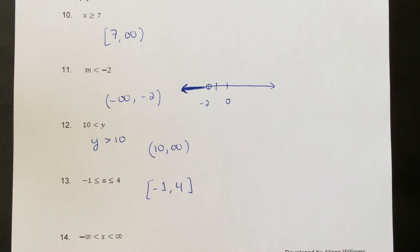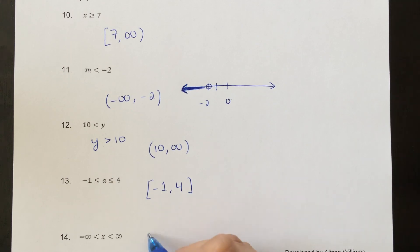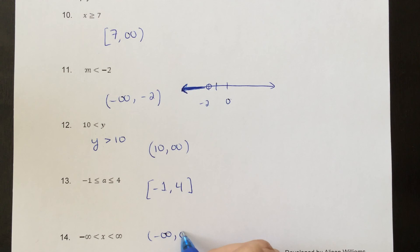The last one goes from negative infinity to positive infinity with no bounds — every number qualifies. So we write negative infinity to positive infinity, and that represents all real numbers.